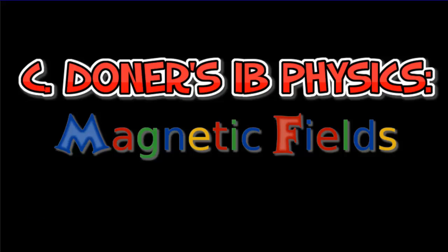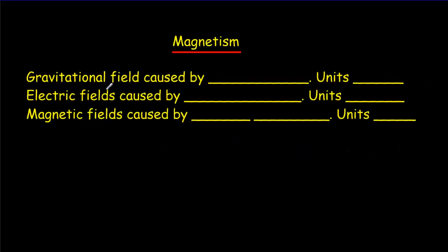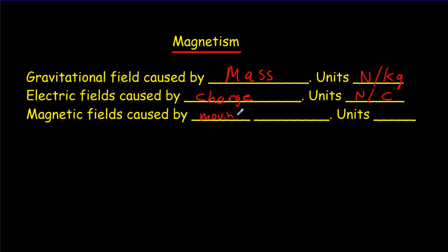Let's have a look at magnetic fields. A few videos ago we had a video called The Three Fields, where we talked about the three fields explored in this course. The gravitational field is caused by mass and has units of newtons per kilogram. Electric fields are caused by charge and have units of newtons per coulomb. Magnetic fields are caused by moving charges, and they have units of newtons per coulomb times meters per second, which has another name — it's called a Tesla.